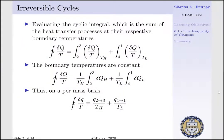Now, evaluating our cyclic integral of delta Q per T — which is the sum of our heat transfer processes at their respective boundary conditions — we have the integral from state 2 to state 3 of delta Q per T at the hot-side temperature, plus the integral from state 4 to state 1 of delta Q per T at the low-side temperature. Since our boundary temperatures are constant, these come outside the integral. Therefore, the cyclic integral of delta Q per T equals Q₂₃ per TH plus Q₄₁ per TL.